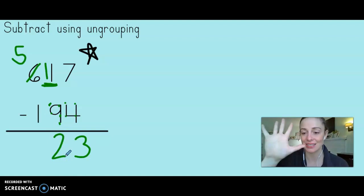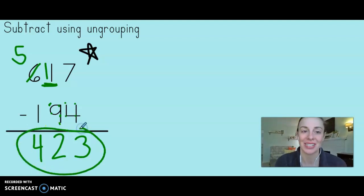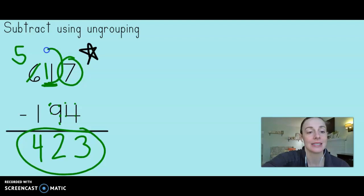And last is five minus one, which is four. Four hundred twenty-three. Great job, second grade. If you notice, I did not need any more ones, but I did need to ungroup to get some more tens.